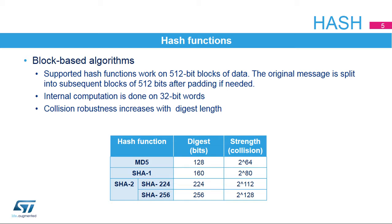All supported hash functions work on 512-bit blocks of data. The input message is split as many times as needed to feed the hash processor, and subsequent blocks are computed sequentially. MD5 is the less-robust version with only a 128-bit digest. The SHA standard has two versions, SHA-1 and the more recent SHA-2, with its 224 and 256-bit digest-length versions.